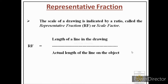Let us use the aeroplane example. Suppose the length of the aeroplane is 10 meters — that is the actual length. We cannot draw 10 meters on paper, so we reduce it. Assume we draw a line of 10 centimeters on paper to represent 10 meters. So the length of the line in the drawing is 10 centimeters divided by 10 meters.